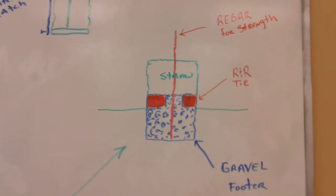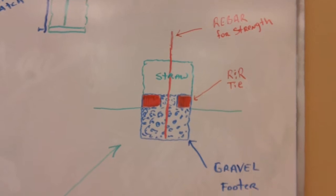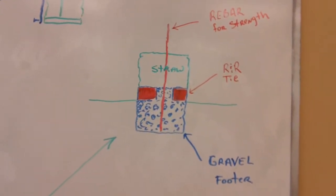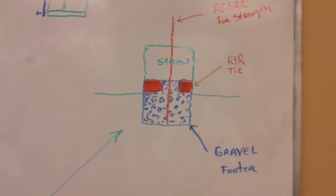So that's how you would do a cheap, easy footer. You can do footers for outbuildings like that with compacted gravel. It's been done a long time, it's not anything new at all.